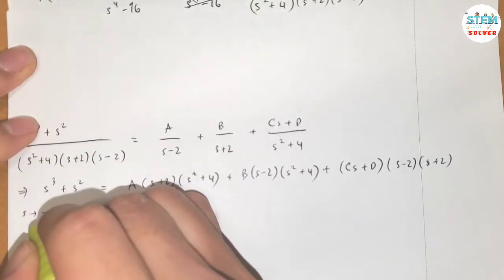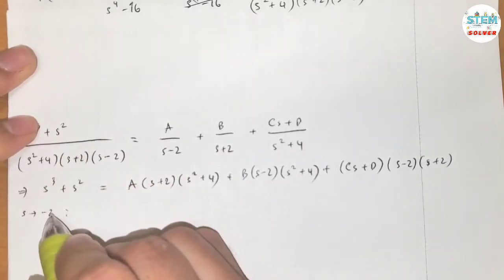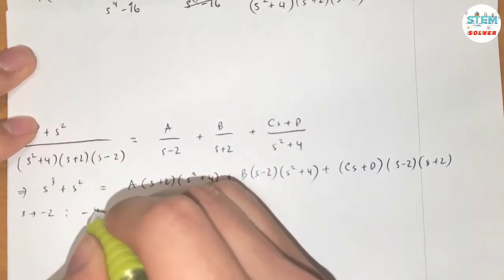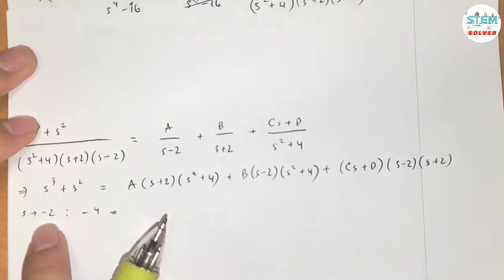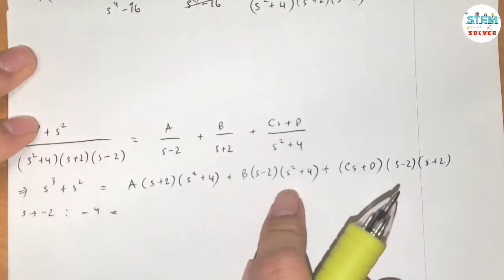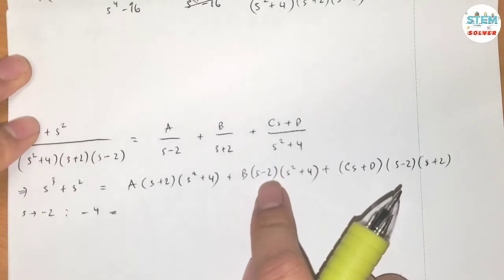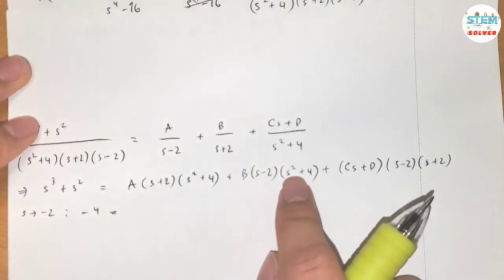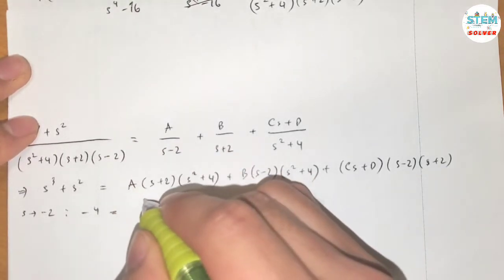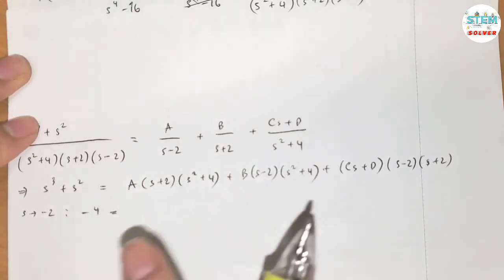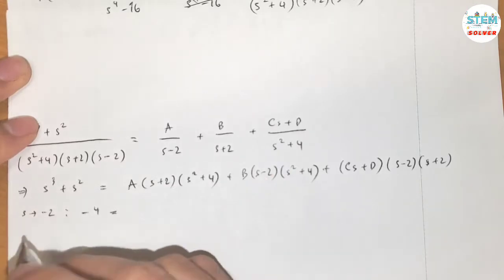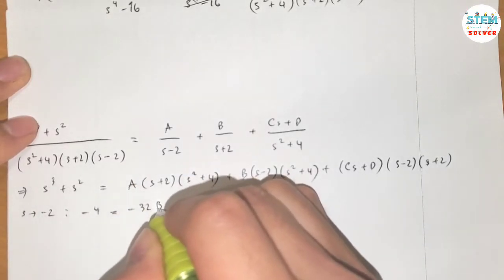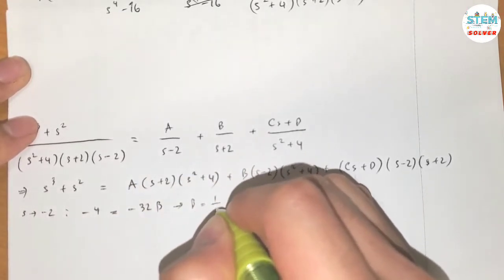S cubed plus S squared over S squared plus 4 times S plus 2 times S minus 2 can be obtained from the summation of A over S minus 2 plus B over S plus 2 plus CS plus D over S squared plus 4. Since the LCD is everything on the denominator here, multiply both sides by that LCD. Then I have S cubed plus S squared equals A times S plus 2 S squared plus 4 plus B times S minus 2 S squared plus 4 plus CS plus D times S minus 2 S plus 2.